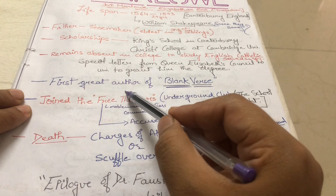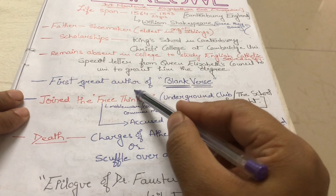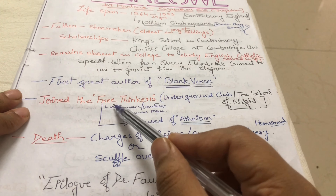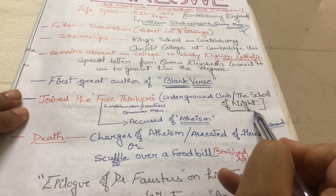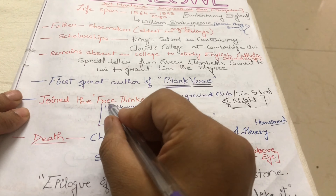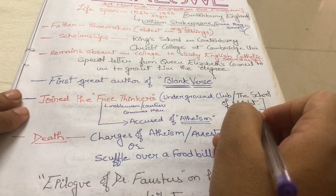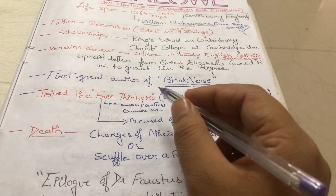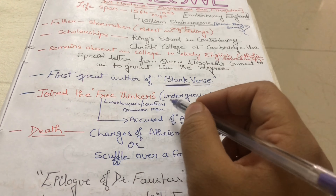Christopher Marlowe was the first great author of blank verse. He joined the free thinkers, a club called the underground club or the School of Night. The members of this club came from each category — they were noblemen, courtiers, and common men.